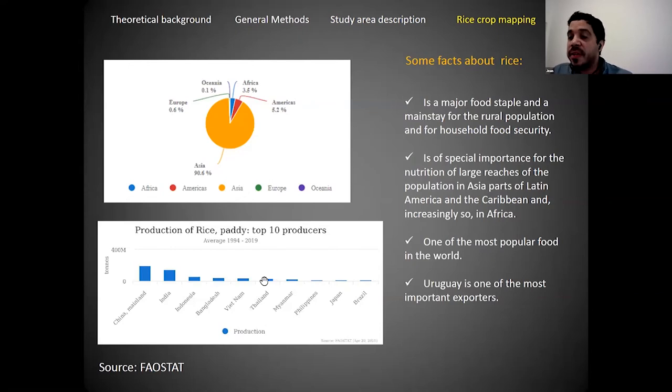We said we're going to map rice crop areas, so let's talk about why. FAO says rice is a major food staple and mainstay for the rural population and for household food security.